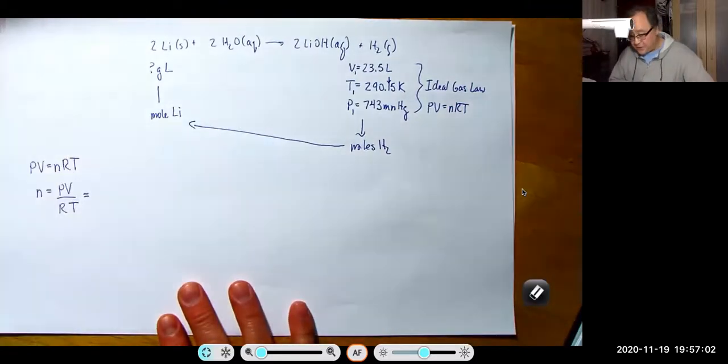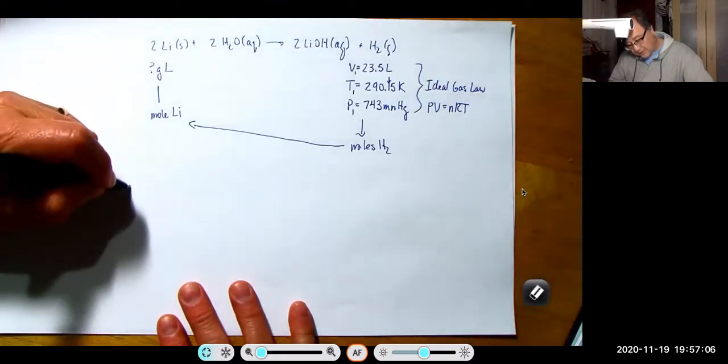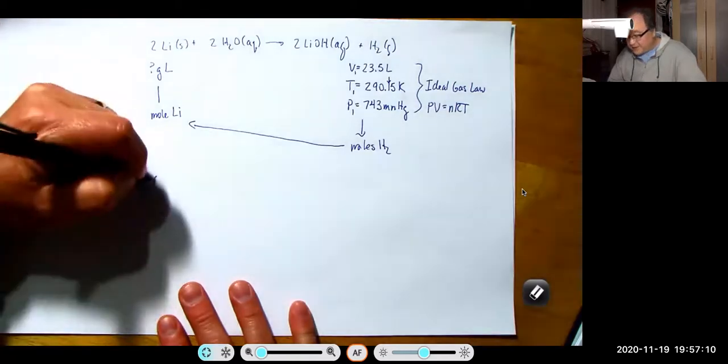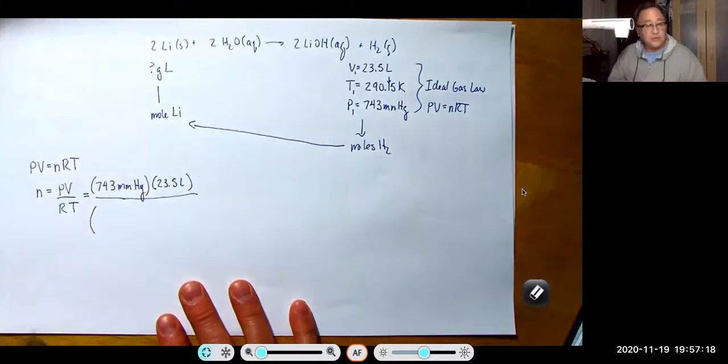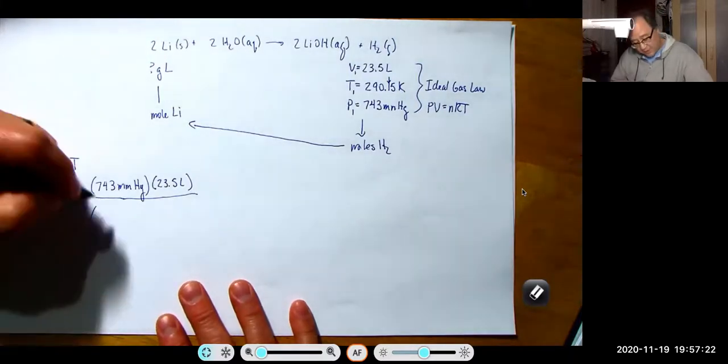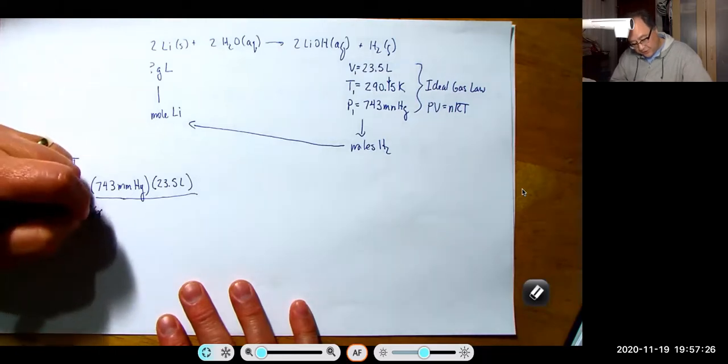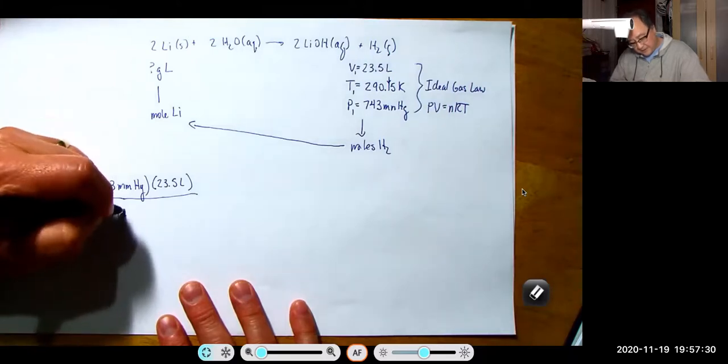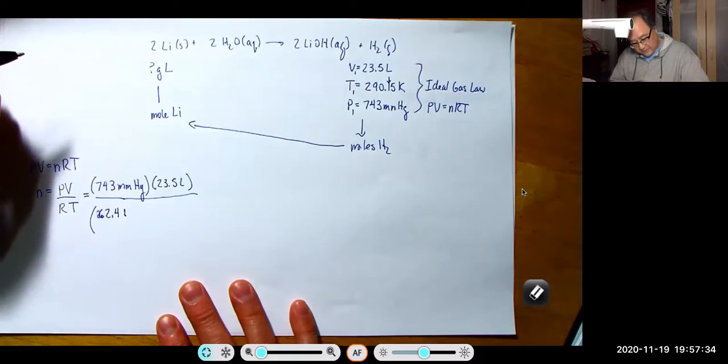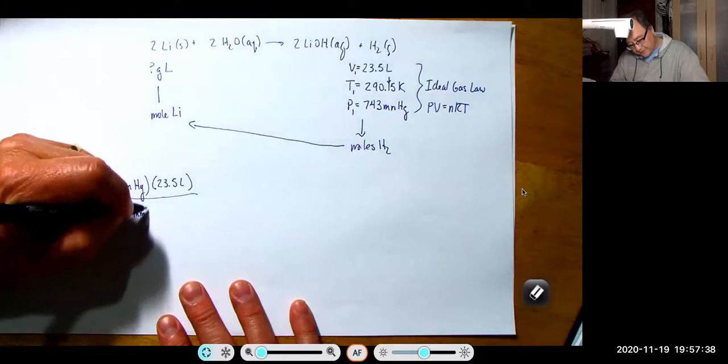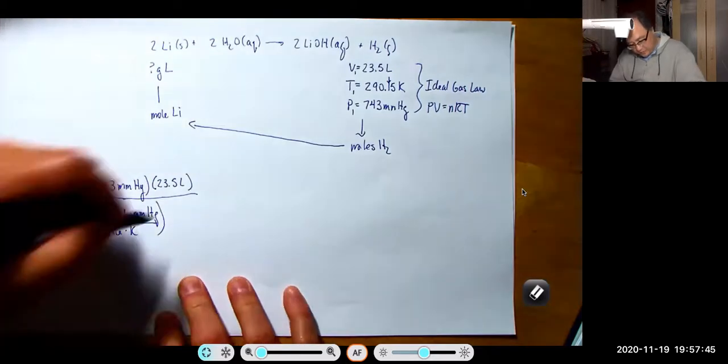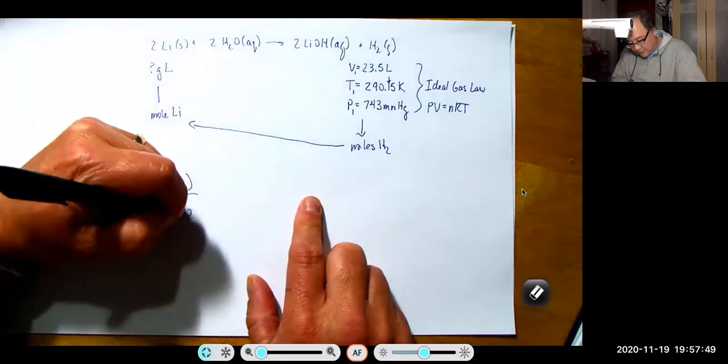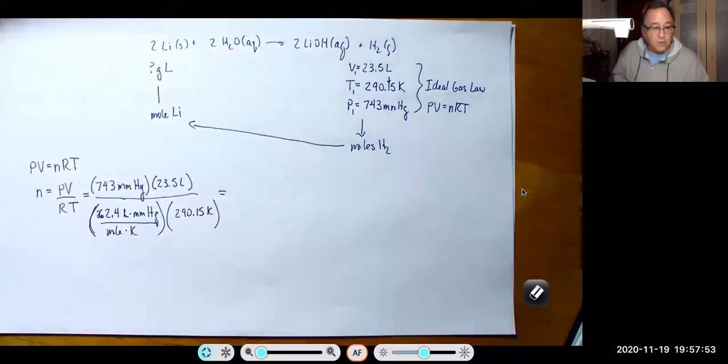We'll plug the numbers in. The pressure is 743 millimeters of mercury. The volume is 23.5 liters. For R, we want to use the one with millimeters of mercury in it. That's the one that's 62.4 liters millimeters of mercury per mole per K. And then we're going to put in the temperature, which is 290.15 K. So that's going to get us our moles of hydrogen.